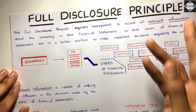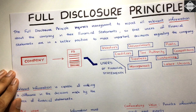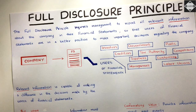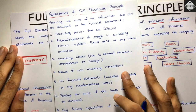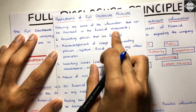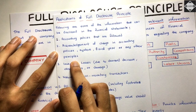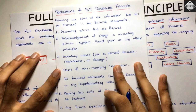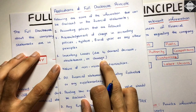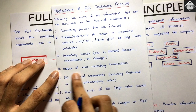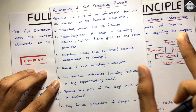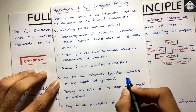Now here is a big list of applications of the full disclosure principle — not everything, but many common ones. These include: accounting policies that are followed, acknowledgement of changes in accounting policies, accounting systems, fiscal year, or any other accounting principles. Also inventory losses due to demand decrease, obsolescence, or damage — significant write-downs must be disclosed properly. Nature of non-monetary transactions, detailed financial statements including footnotes and supplementary notes.